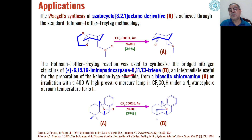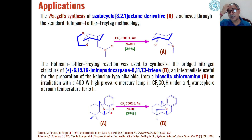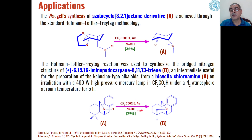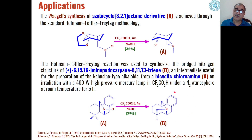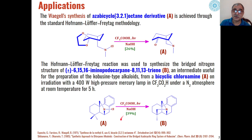6,15,16-amino-berdocarpine trienes can also be synthesized as the product from N-chloro-bicyclic amines. When these bicyclic chloroamines are reacted with trifluoroacetic acid under photochemical conditions in the presence of sodium hydroxide, 39% of the product of the 8,11,13-triene is formed through HLF reaction under photochemical conditions.